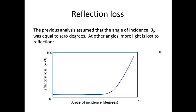The previous analysis assumed that the angle of incidence, theta sub i, was equal to 0 degrees. At other angles, more light is lost to reflection — and you've experienced this in everyday life. If you put a light at an angle to a surface, it tends to reflect more light than if the light is directly above the surface. Reflection losses are typically around 5% at low angles of incidence but can increase dramatically, close to 100%, at high angles of incidence.